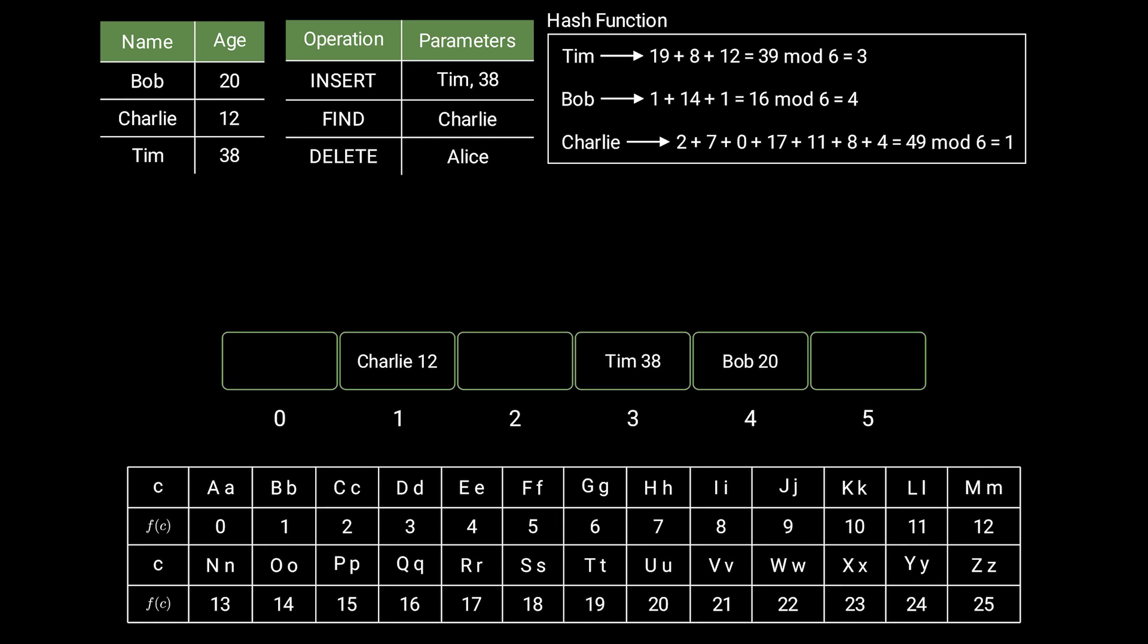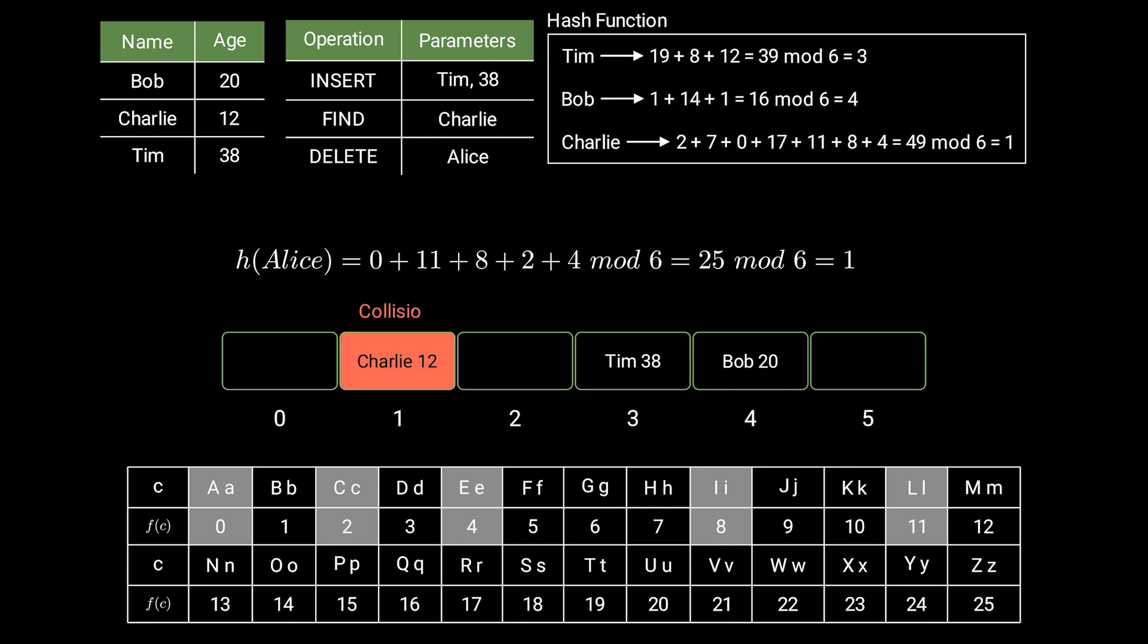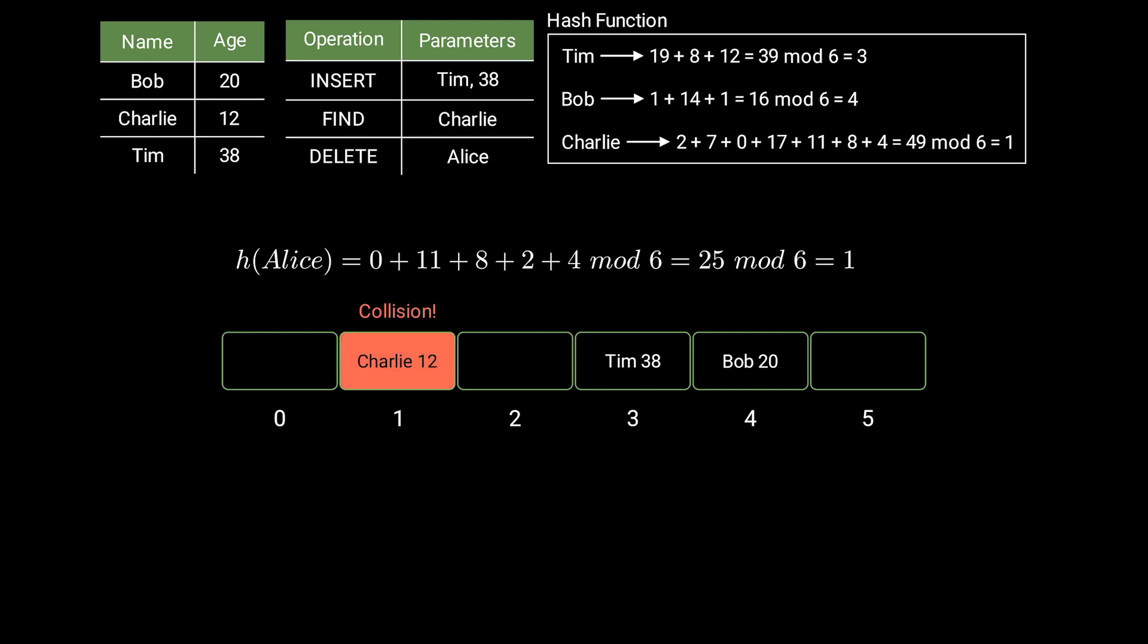Let's look at another example. Say that we want to store Alice's age. The hash function returns a slot 1 that is already taken by Charlie. This situation is called a collision. You may say, let's change the hash function to avoid collisions, and that would be ideal. While a well-designed hash function can minimize the number of collisions, we still need a method for resolving them.